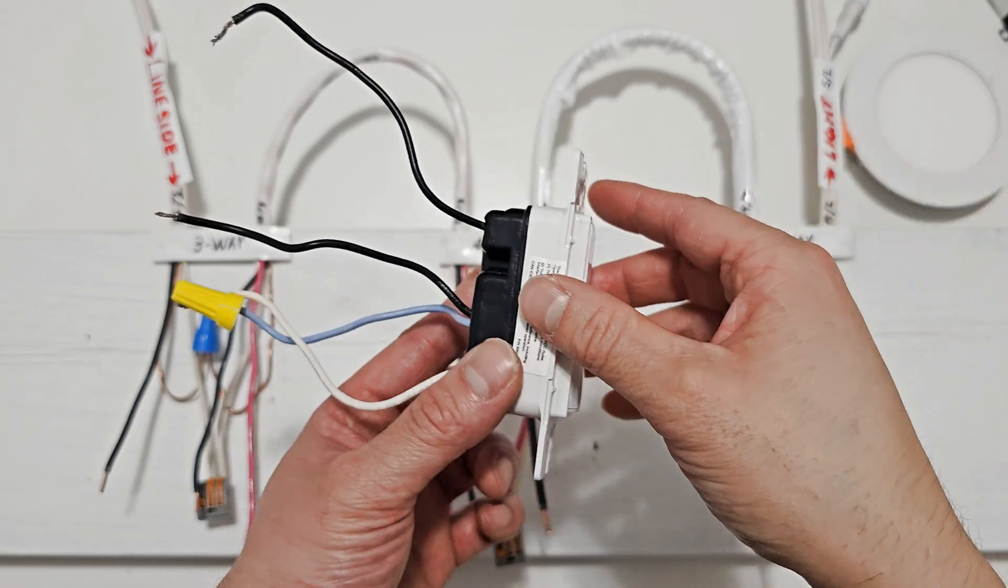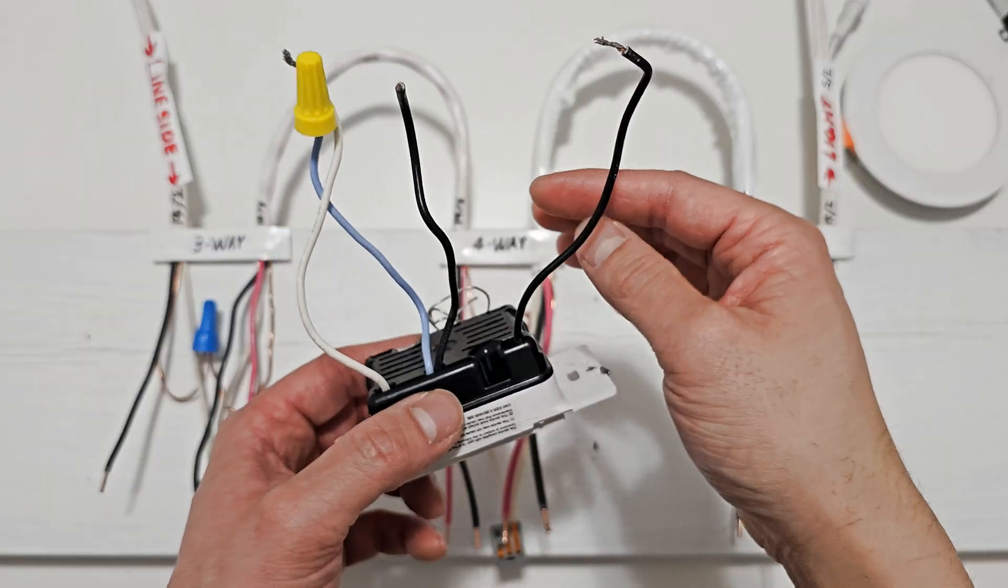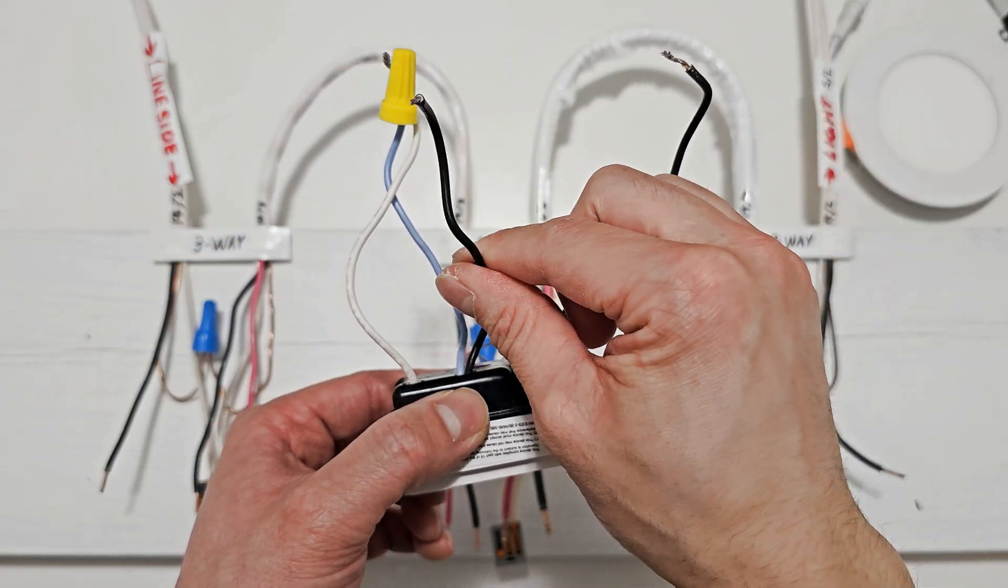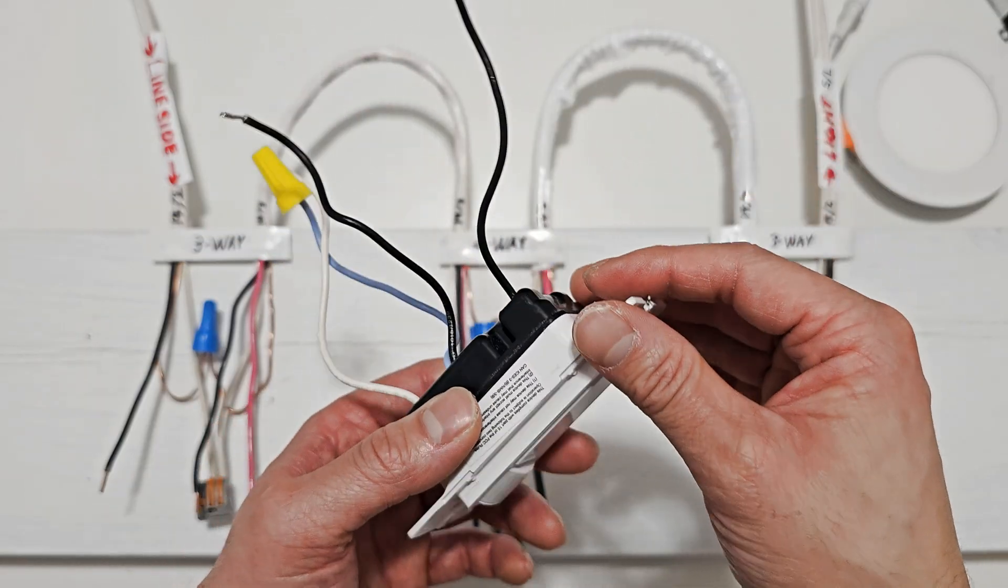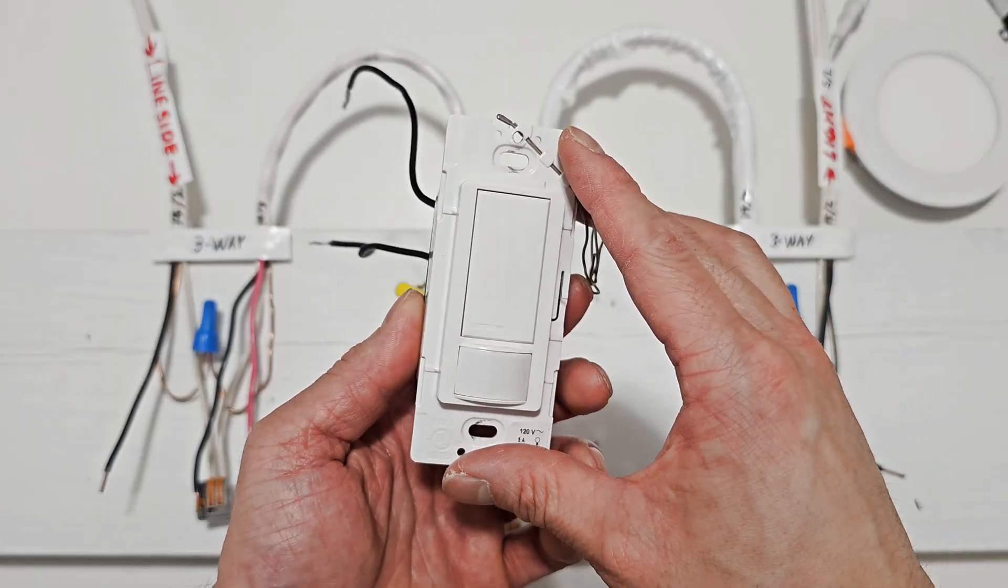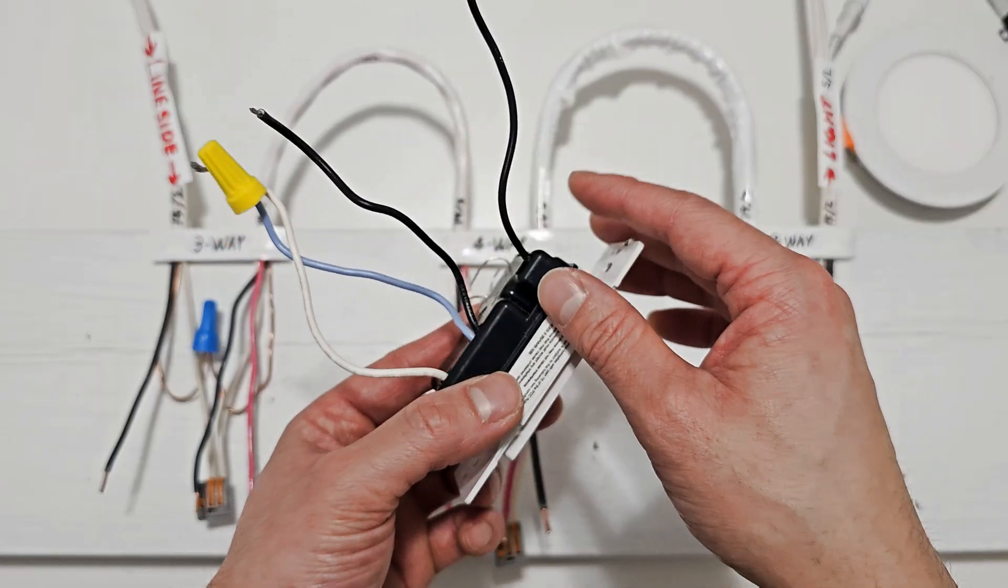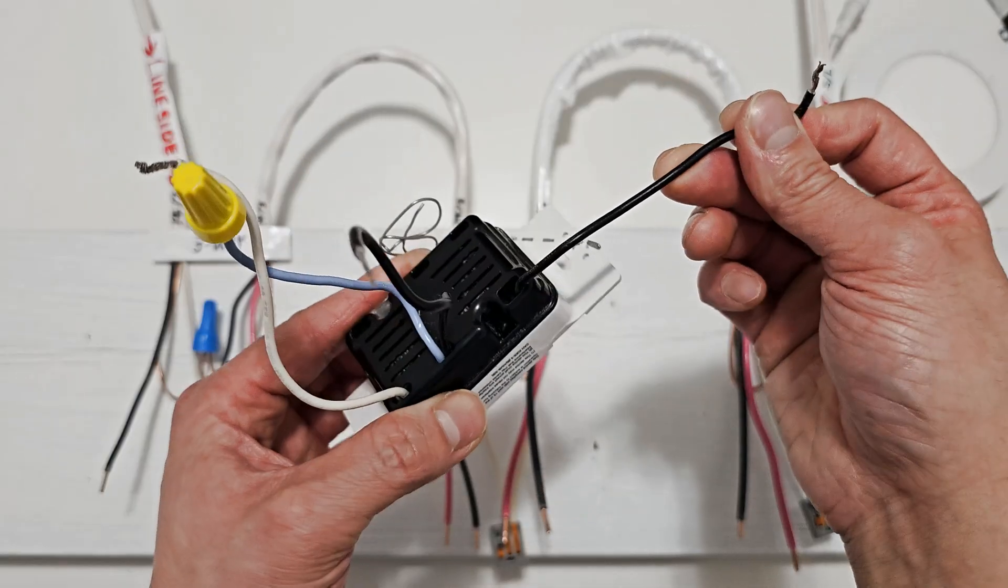Since we're treating the switch as a single pole switch, if we connect the power side to this wire or this wire, it will work the same. It does not matter, but to keep things simple, on three of our switches, we will connect the power side to the top wire.